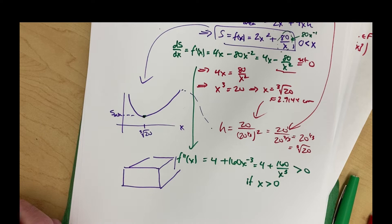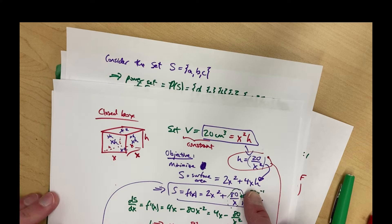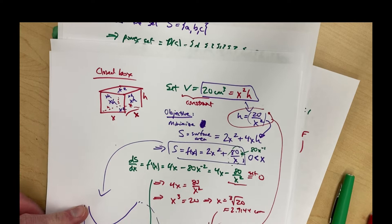The idea is the same: you use your constraint to solve for h in terms of x, substitute into the surface area function to get a function of just one variable, then use single-variable calculus — take the derivative, set it equal to zero, solve for x, and check that you're really getting a minimum.